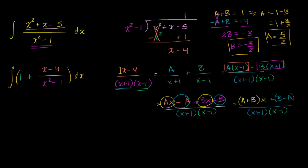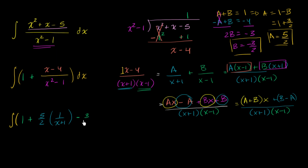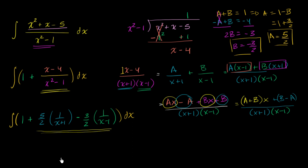Just like that, we can rewrite the whole integral in a form that's easier to integrate. It becomes the integral of one, plus five halves times one over x plus one, minus three halves times one over x minus one, all dx. That's all we did — take the original expression and apply partial fraction expansion into these two simpler terms.